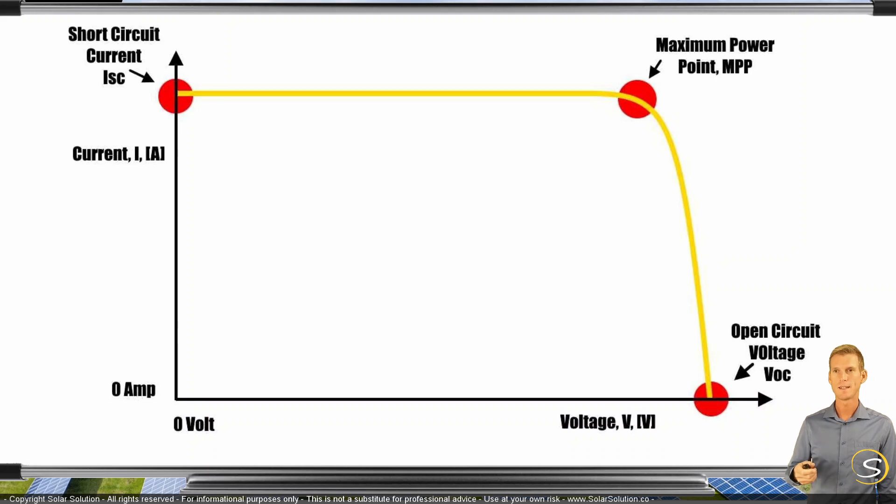will start all the way at the open circuit voltage. So it will have an open circuit situation whereby no current is flowing, but there is a voltage coming from the panel. And then what it does, it just does what the engineer has told it to do. So it will reduce the voltage step by step.